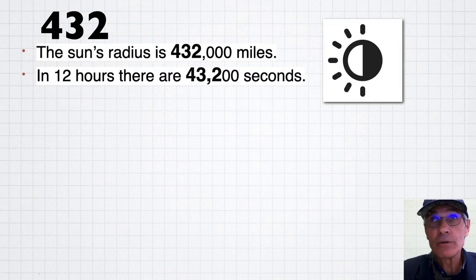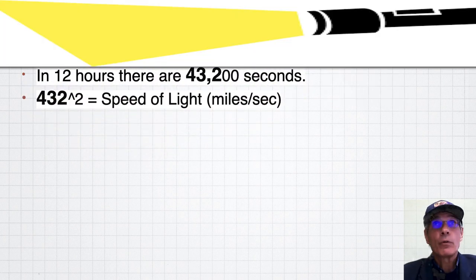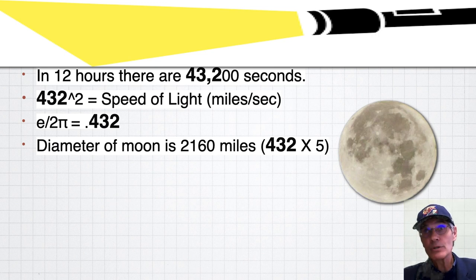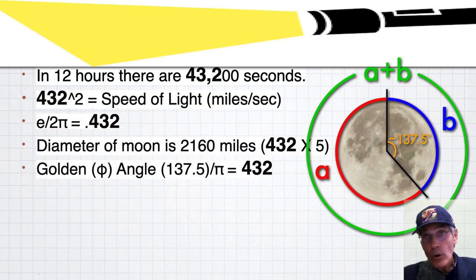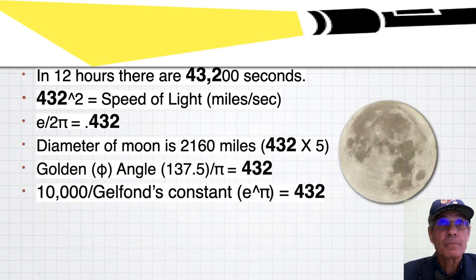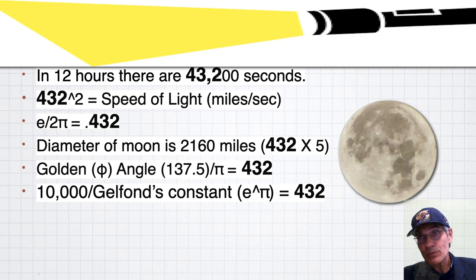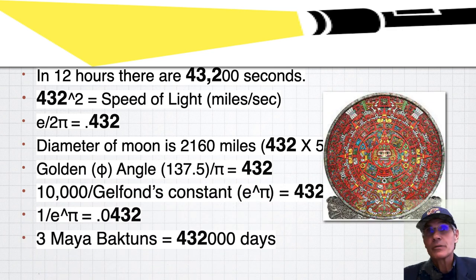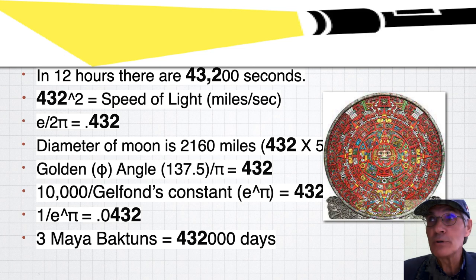In 12 hours there are 43,200 seconds. 432 squared is the speed of light in miles per second. E over 2π equals 0.432. The diameter of the moon is 2160 miles, which is 432 times 5. The golden angle 137.5 degrees divided by π equals 432. 10,000 over Gelfond's constant, which is E to the π, sort of the root of Euler's identity formula, is 432. Robert Grant found that 1 over E to the π is 0.0432. Three Mayan baktuns is 432,000 days.